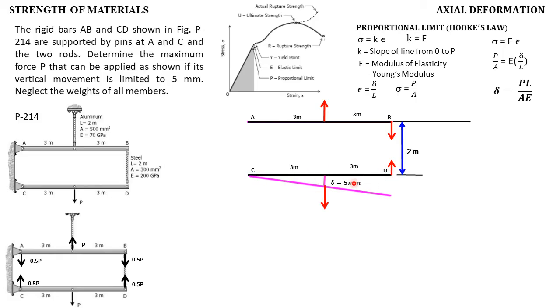From the similar triangle, 3 is to 5 and 6 is to what equivalent? That is equivalent to 10mm. So can we say that this 10mm is the deformation of the steel rod alone? No, we cannot say that yet. Because we have forces here. The internal forces at point B in the steel rod, the tendency is to rotate the rod AB. So it rotates. From there, the aluminum rod deformed. If there's deformation there, there's movement at B.